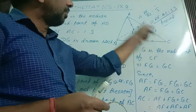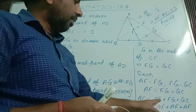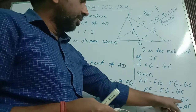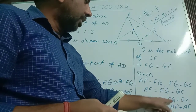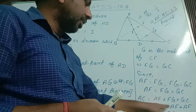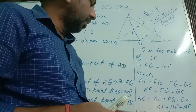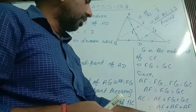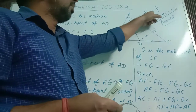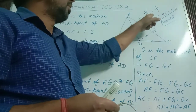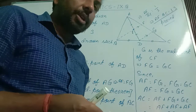Now AC equal to AF plus FG plus GC. Since FG and GC are both equal to AF, we replace them: AC equal to AF plus AF plus AF, so AC equal to 3AF. Therefore AF by AC equal to 1 by 3, so AF is to AC equal to 1 is to 3 — proved.